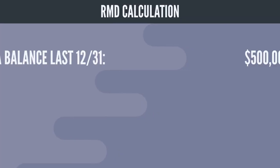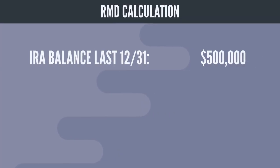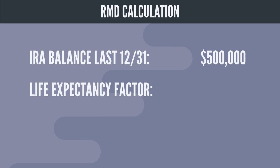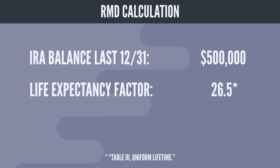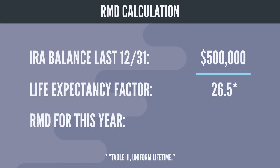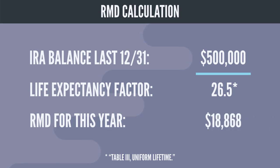To calculate her RMD for this year, Alice uses the life expectancy factor from IRS tables — 26.5 years — divides her account balance by this factor, and determines that her RMD for this year is $18,868.